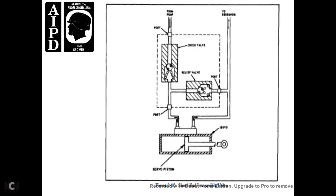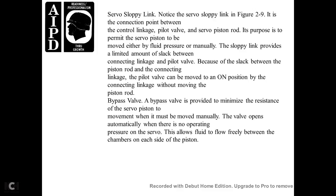Servo Sloppy Link. The sloppy link in figure 2-9 is the connection point between the control linkage pilot valve and the servo piston rod. Its purpose is to permit the servo piston to be moved either by fluid pressure or manually. The sloppy link provides a limited amount of slack between the connection linkage and pilot valve. With this slack between the piston rod and connection rod, the pilot valve can be moved to a position by the connecting linkage without moving the piston rod.